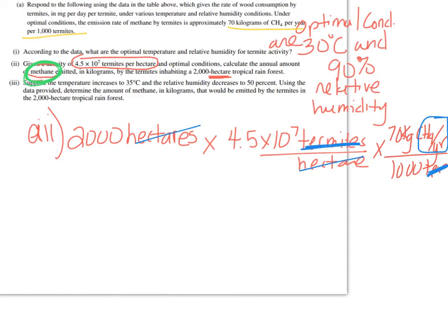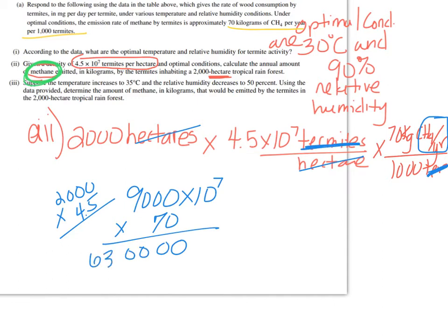So now I'm just going to multiply 2,000 times 4.5. If you can't do it in your head, you can just do it off to the side. But the answer to that is 9,000. So 9,000 times 10 to the 7, and then I need to multiply that by 70. Let me back up. So here I have 63, 630,000.